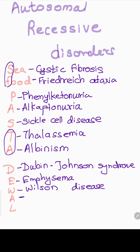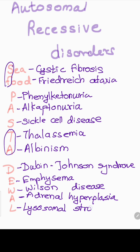A is for albinism or adrenal hyperplasia, and L is for lysosomal storage diseases.